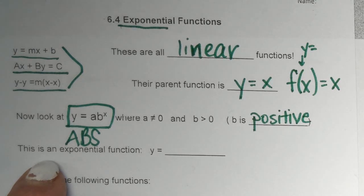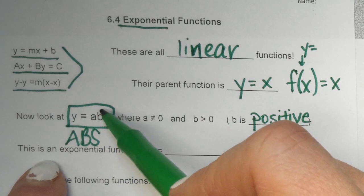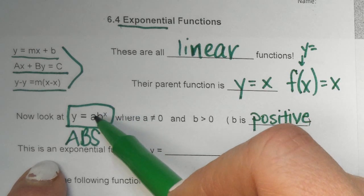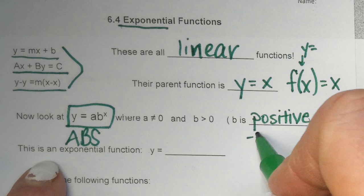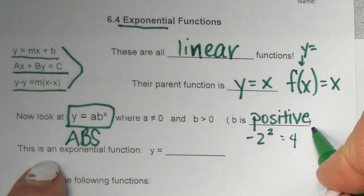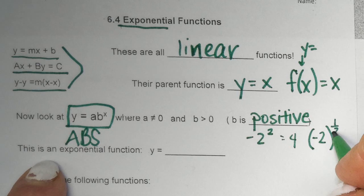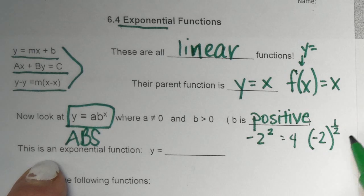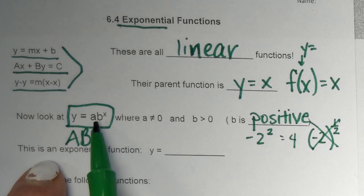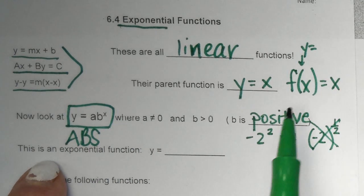We know from our worksheet yesterday, or today in class, when you have a b as a base that is negative to a regular exponent like negative two to the second power, well, that's okay. That's still four. But when you have negative two with parentheses to the one half, you can't do that. Remember, that's not a real number. So we're just going to say we want all of our b's to be positive. So anything that's going to be the base of the exponent needs to be a positive number. If it's not, you can't use the abs.